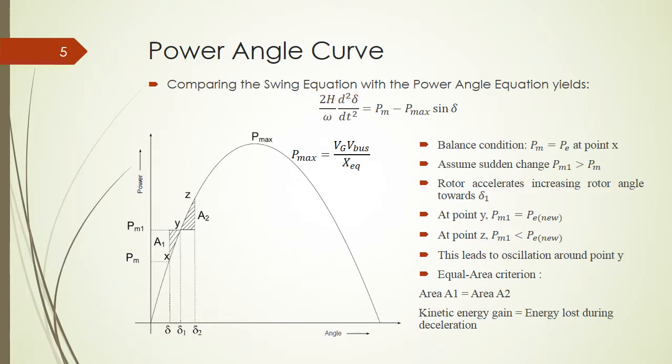Next, we compare the swing equation with the power angle equations. Here is the result: on the left-hand side we have the expression that shows the change variation of delta over time, and on the right-hand side we have the mechanical power and the electrical power. If we plot it, we see that the electrical power will be like this, so this is P_max times sine delta. It takes this shape. The horizontal axis is the angle, and the vertical axis is the power. This power will be compared with the mechanical power. For example, our mechanical power P_m is here. We assume that at the beginning it stays stable, so P_m equals P_max sine delta at this point X, and it's balanced.